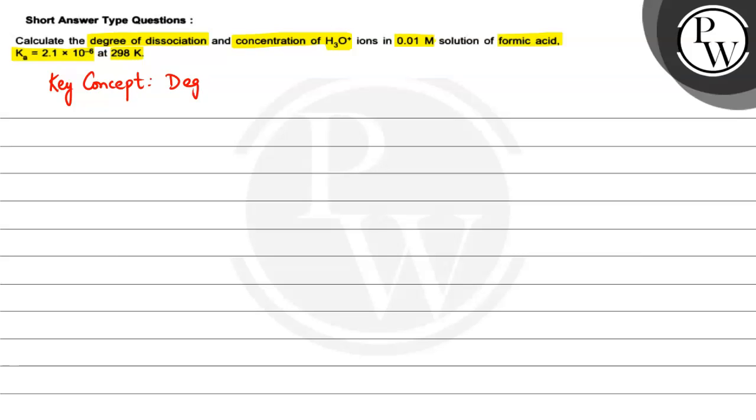How to calculate degree of dissociation? And from that we will derive the concentration of H3O plus.